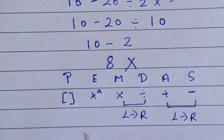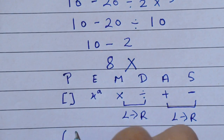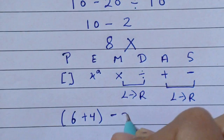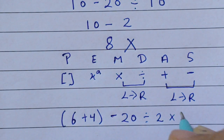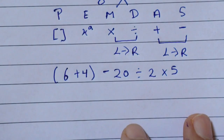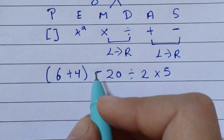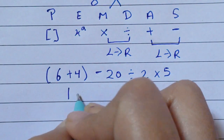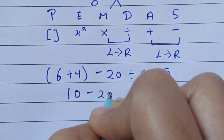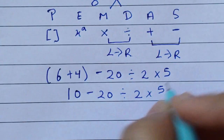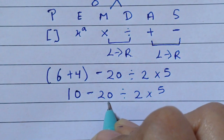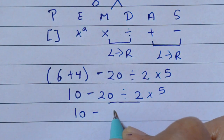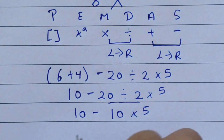So let's solve the expression according to BODMAS rule. Write the equation: (6 + 4) minus 20 divided by 2 times 5. First we solve the parentheses: 6 plus 4 equals 10, giving us 10 minus 20 divided by 2 times 5. Next, following left to right for division and multiplication: 20 divided by 2 is 10, so we have 10 minus 10 times 5.